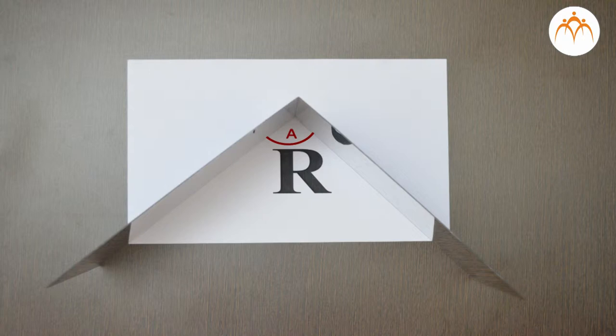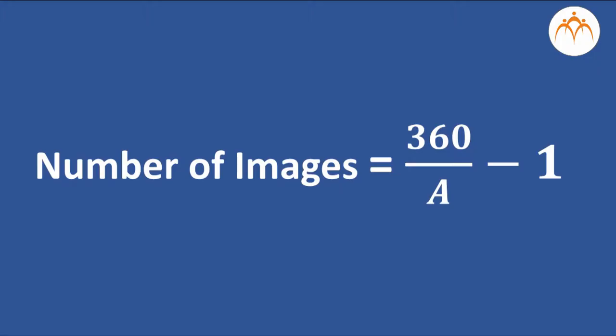The number of images formed when two plain mirrors are placed next to each other at an angle A can be found out with the help of this formula. Number of images equals 360 divided by A minus 1. Can you find out what will be the angle between the mirrors if seven images of the object are formed?